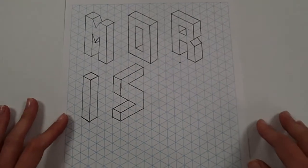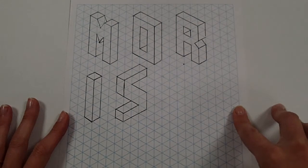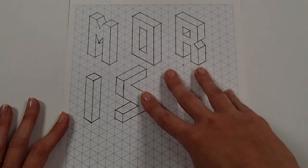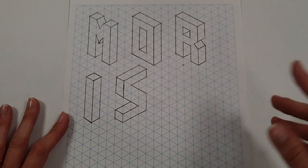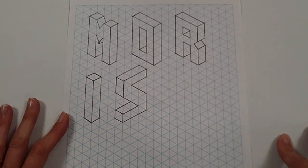Right then Year 7, so I'm going to show you now how we're going to be creating our isometric drawings using our own names. Now for my example I've used my surname, but you can choose to use your first or surname, whichever one you'd like to do.